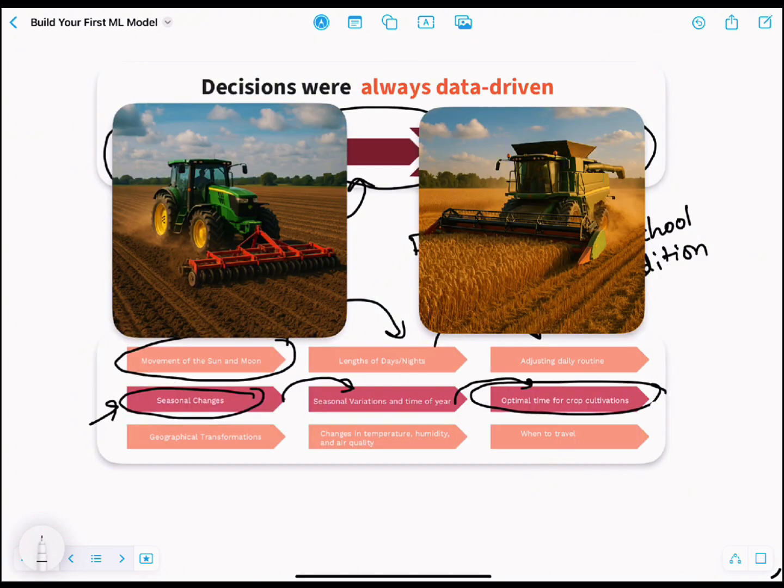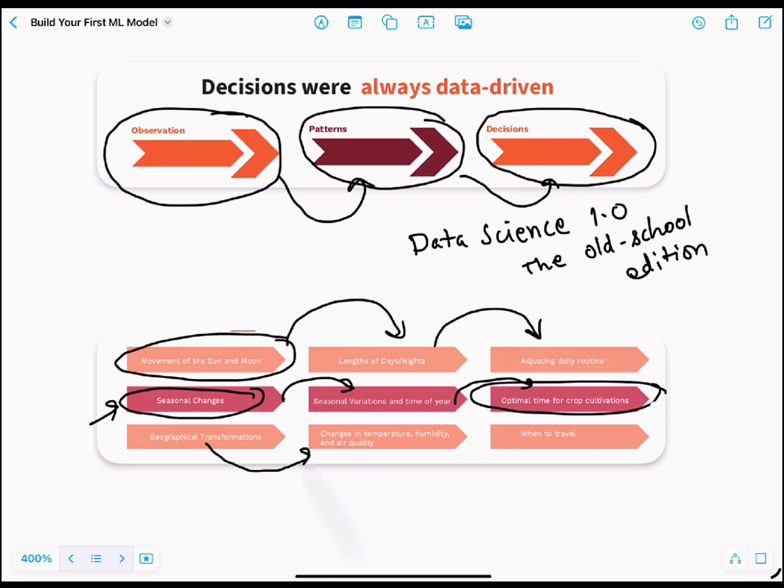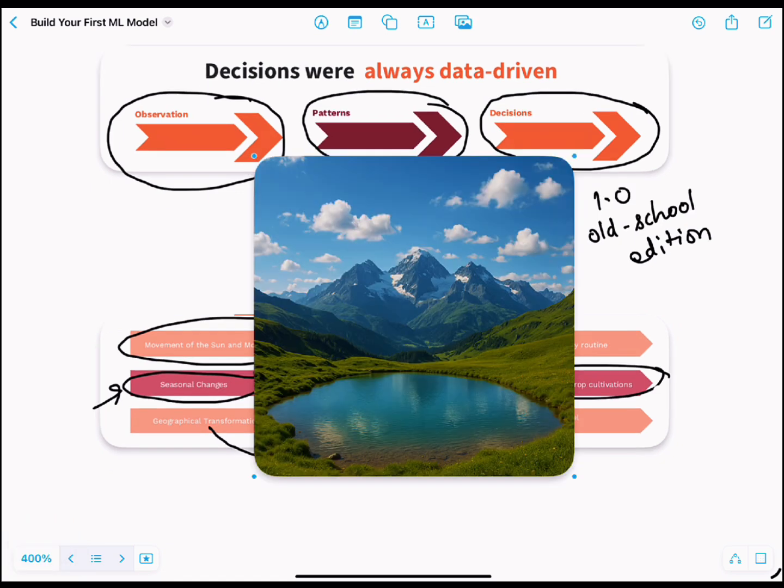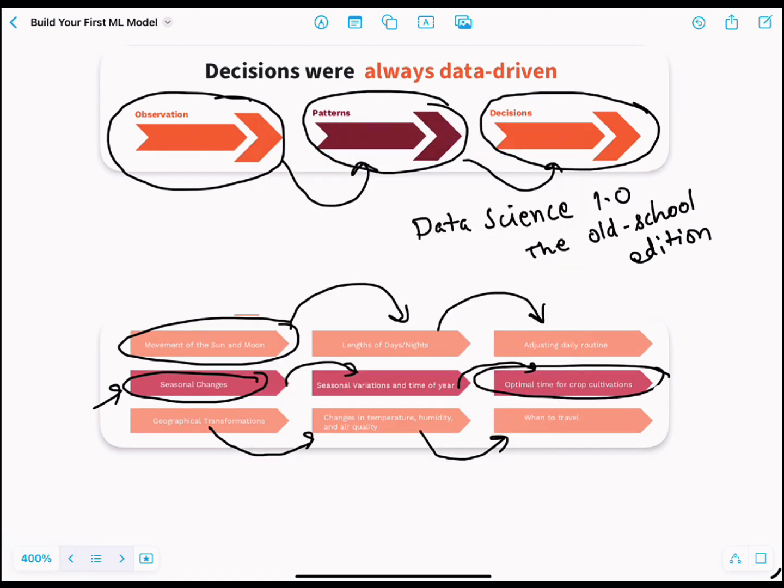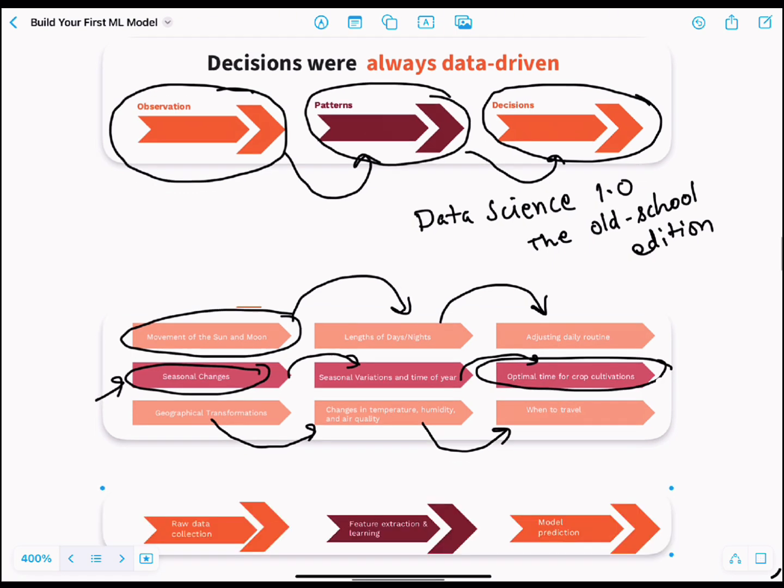People also observed how landscapes changed - floods, dry spells, forest growth. From that they figured out climate patterns and used them to decide when it was safe to travel. They knew that in summers it's time to go to the mountains, and we also know that.